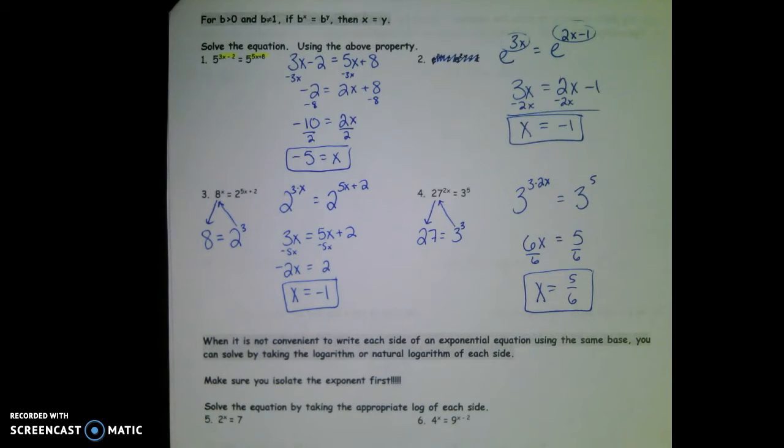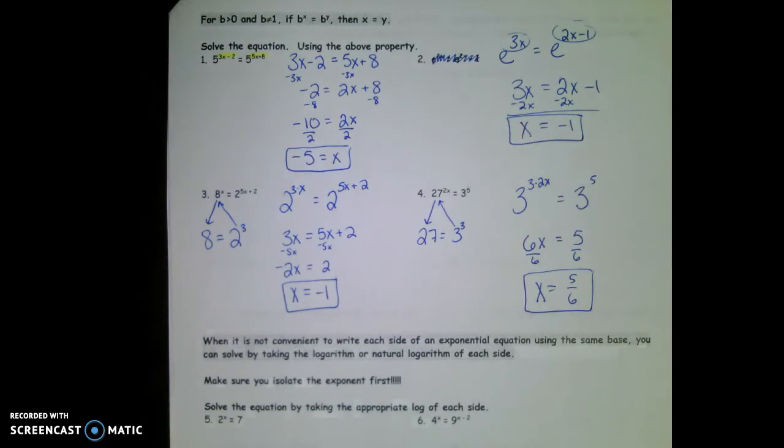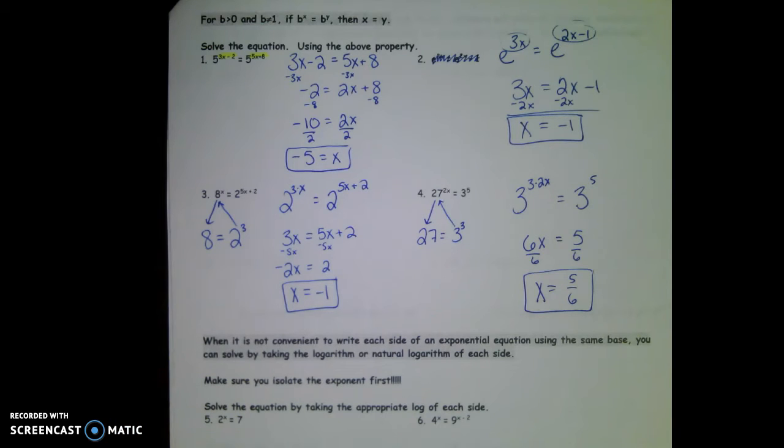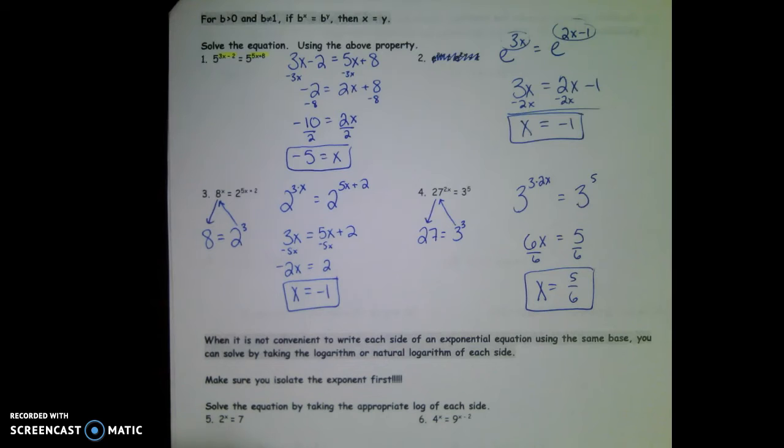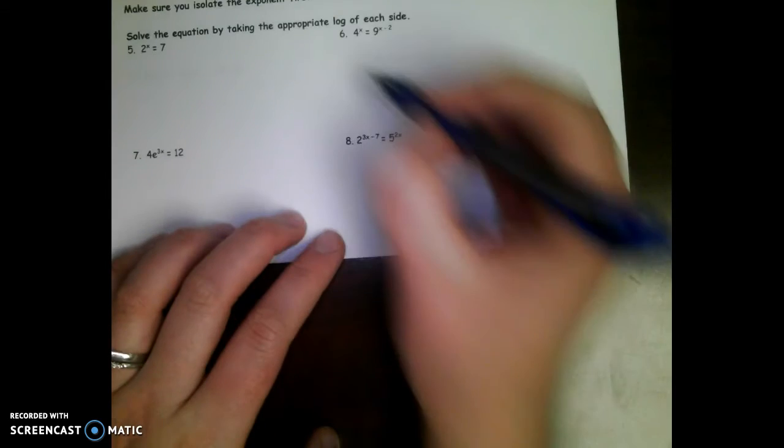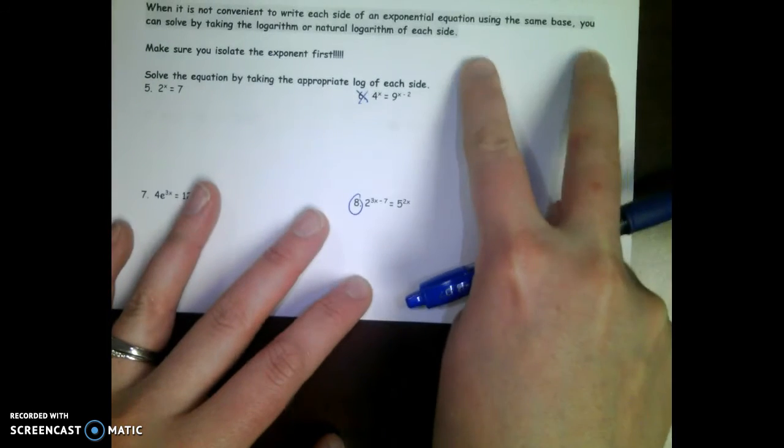So far with exponents on both sides, either the bases are already the same and you put the exponents equal to each other, or the bases aren't the same and you think about how to make those bases the same. Then you can put the exponents equal to each other. Now we're going to go to number eight. Number eight's the more complex, so we'll just go straight for the more complex problem.